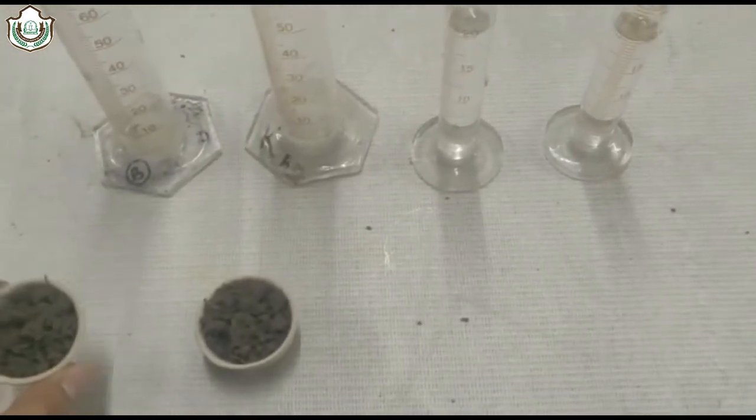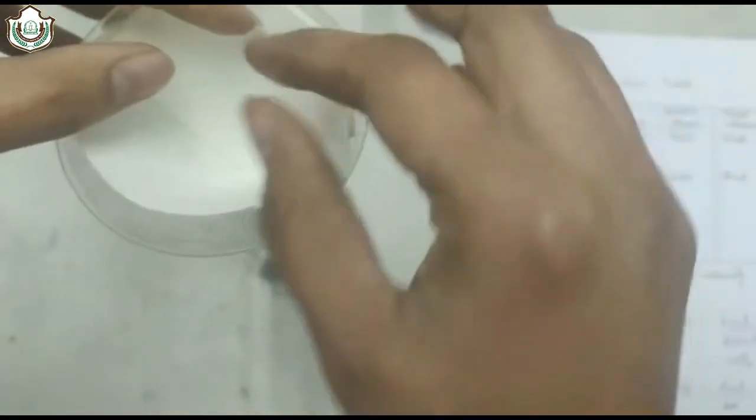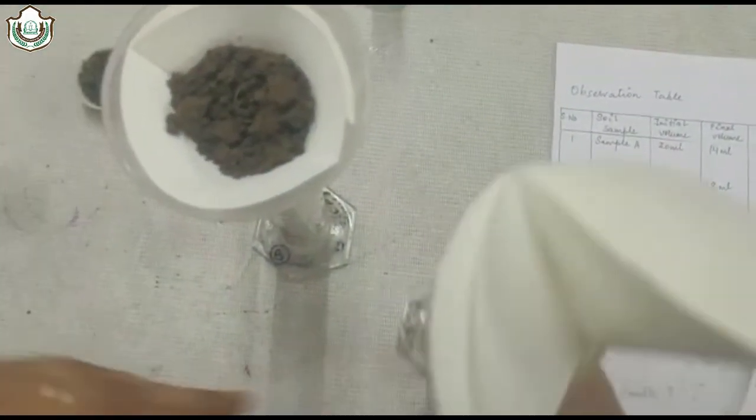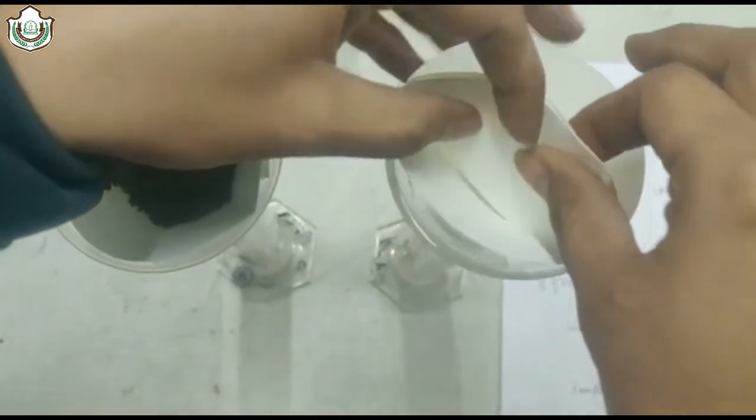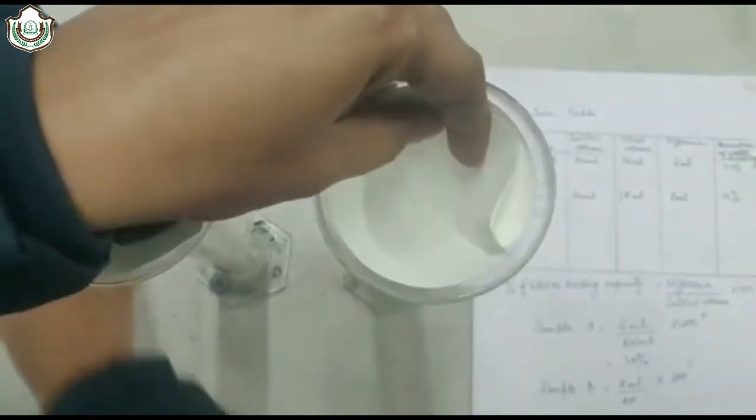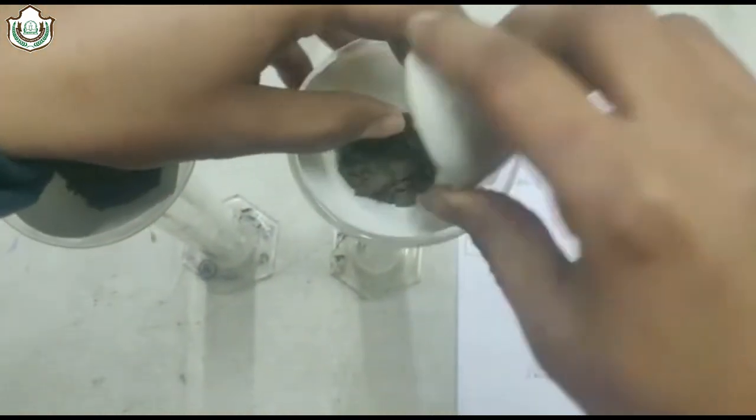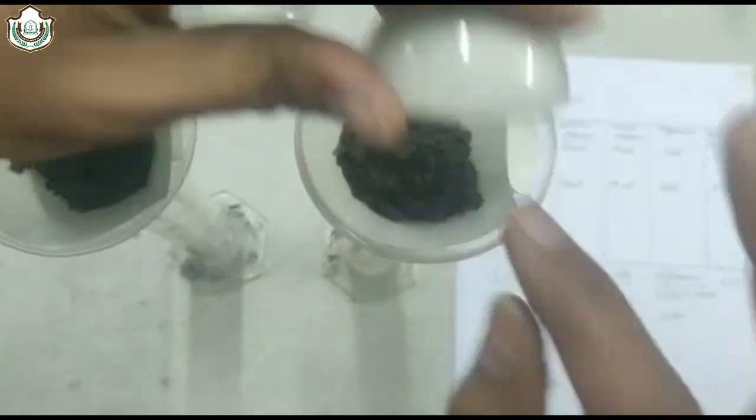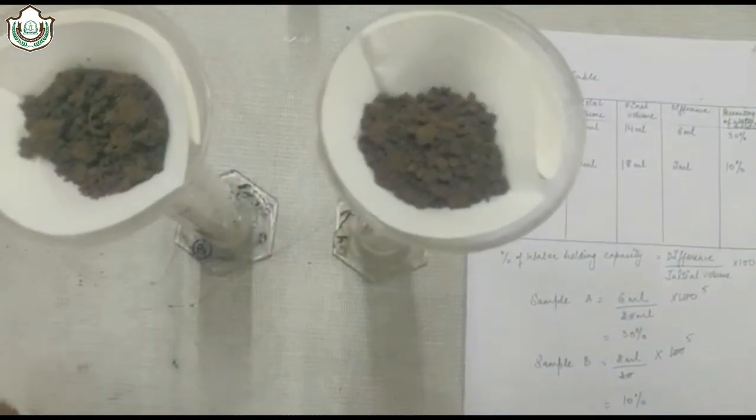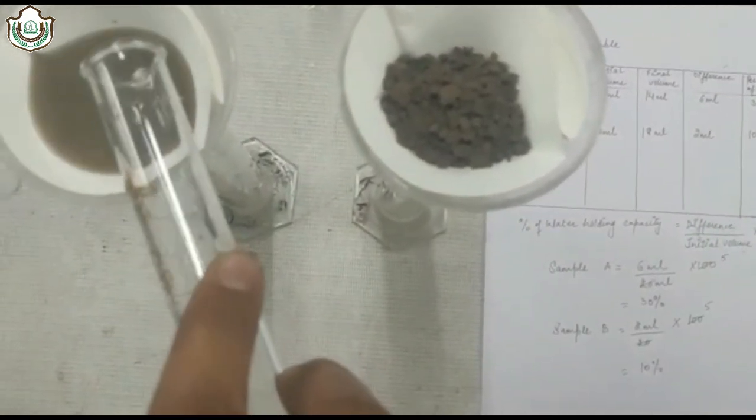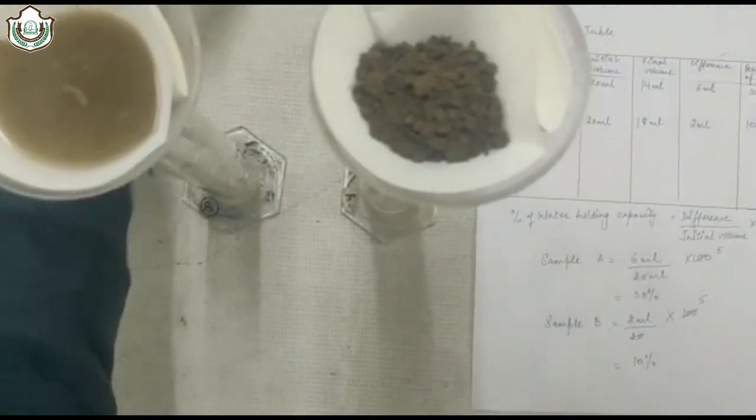We have 20 grams of soil. Now add 20 grams of soil sample A in one measuring cylinder and soil sample B in the next measuring cylinder.